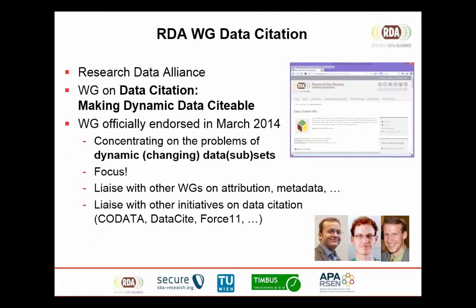That's the setting we started with as part of the Research Data Alliance. The working group was officially endorsed just before the previous plenary in Dublin in March this year. We decided to keep it very focused on the technical aspects of identifying those subsets — not discussing what metadata to assign, not discussing bibliometrics and credit — but basically finding a solution that identifies the data set and then passes that solution on to other working groups that deal with metadata and credit attribution.